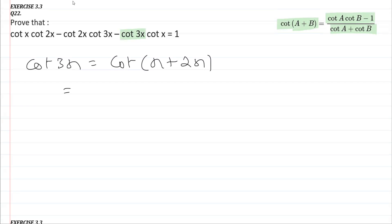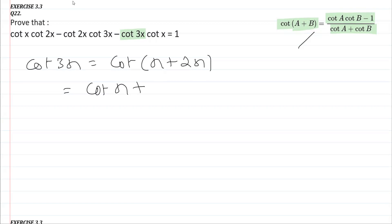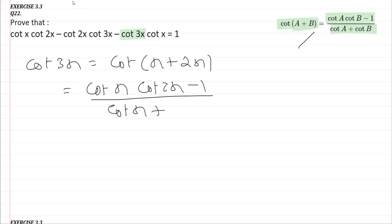Now, if we apply this identity taking x as A and 2x as B, what we get is: cot A into cot B, which is cot x into cot 2x, minus 1, all divided by cot A plus cot B, that is cot x plus cot 2x. So we have cot 3x expressed on the left hand side.